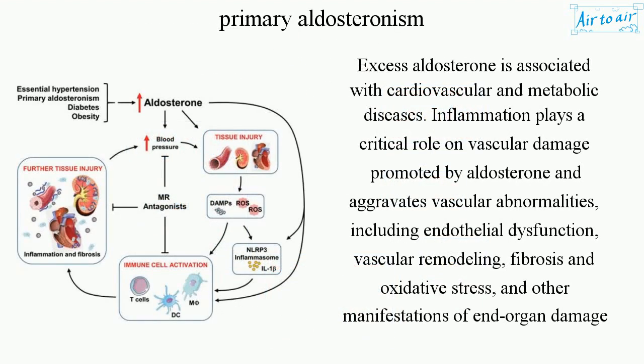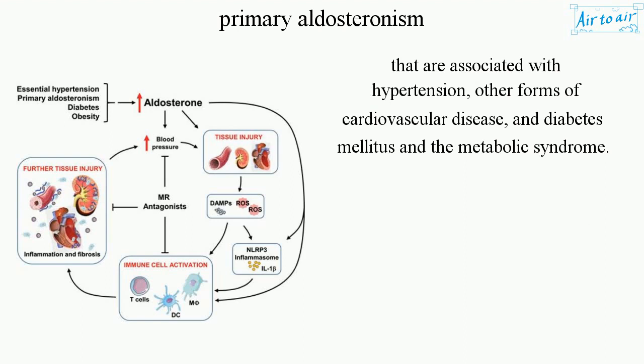Excess aldosterone is associated with cardiovascular and metabolic diseases. Inflammation plays a critical role in vascular damage promoted by aldosterone and aggravates vascular abnormalities including endothelial dysfunction, vascular remodeling, fibrosis, and oxidative stress. These represent manifestations of end-organ damage associated with hypertension, other forms of cardiovascular disease, diabetes mellitus, and the metabolic syndrome.